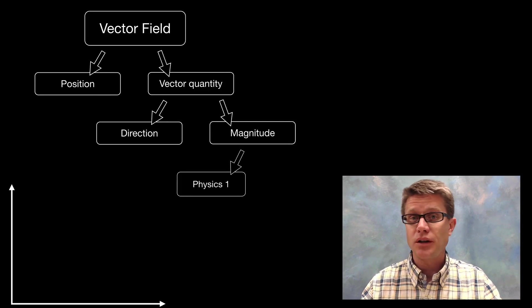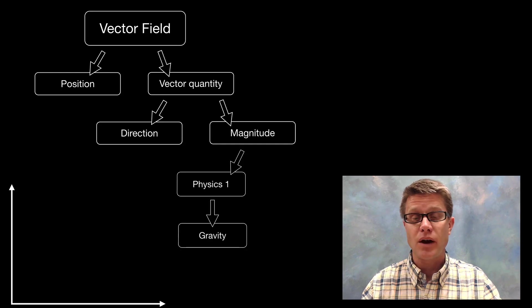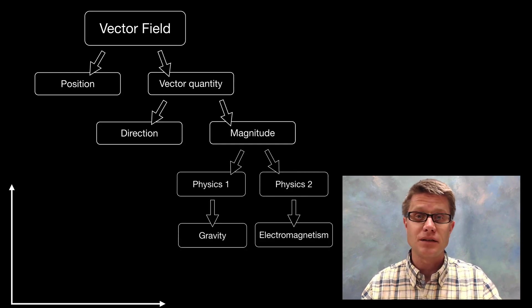In Physics 1 you should really understand how to do vector fields for objects related to their gravitational attraction. In Physics 2 it's more with electromagnetism.